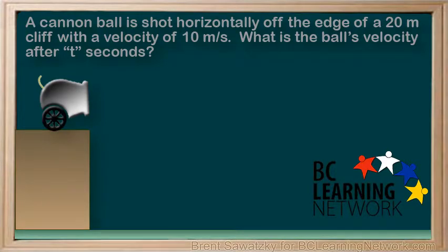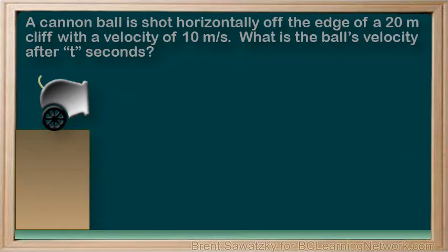Another fairly typical question related to projectiles is as follows. A cannonball is shot horizontally off the edge of a 20 meter cliff with a velocity of 10 meters per second. What is the ball's velocity after t seconds?